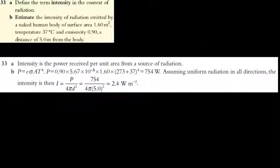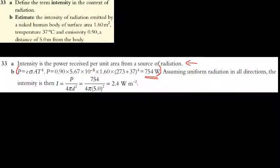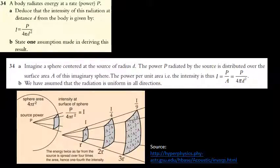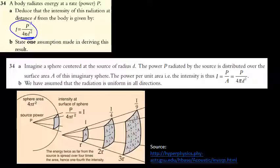Question 33: part a is a definition — you should be able to recall albedo. For part b, first use the Stefan-Boltzmann law to find the power radiated by a naked human body, then to find the intensity at 5 metres away from the body, use the inverse square law: I = P / (4πd²).